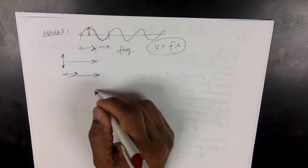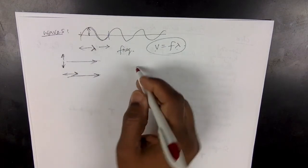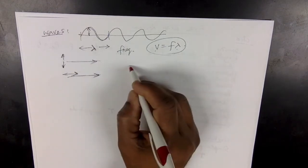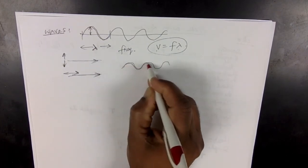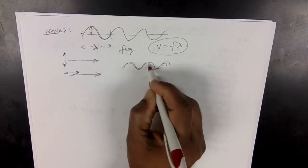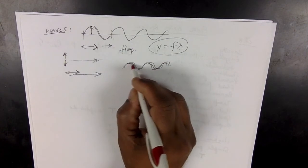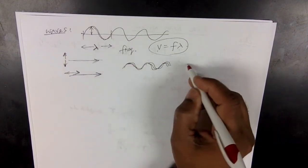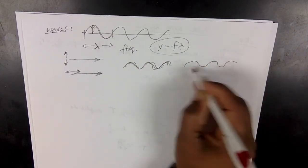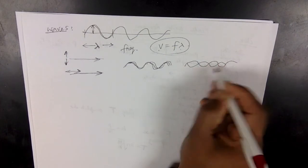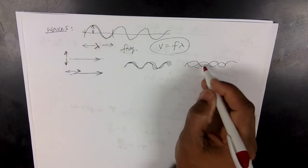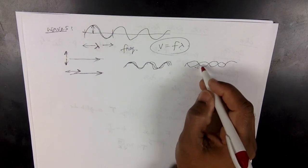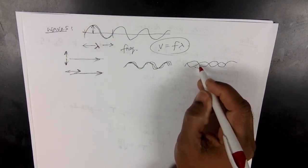What happens when waves meet? When two waves meet in the same place, it is called interference. When two waves meet in the same manner, it is constructive interference. When two waves meet in an opposite manner, that is destructive interference. You can see those things written on pages 386–387.